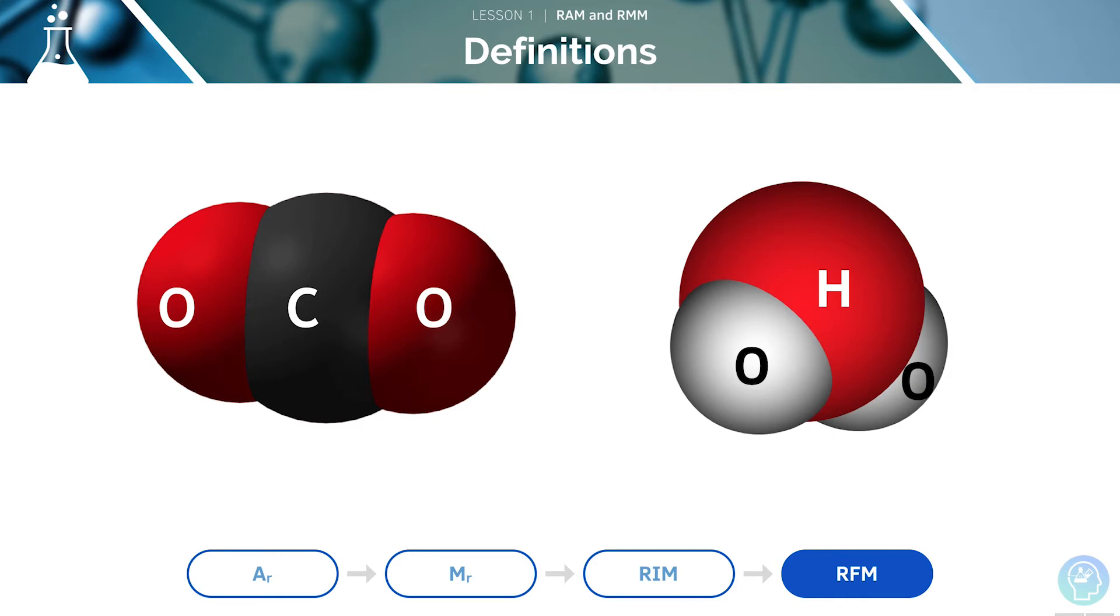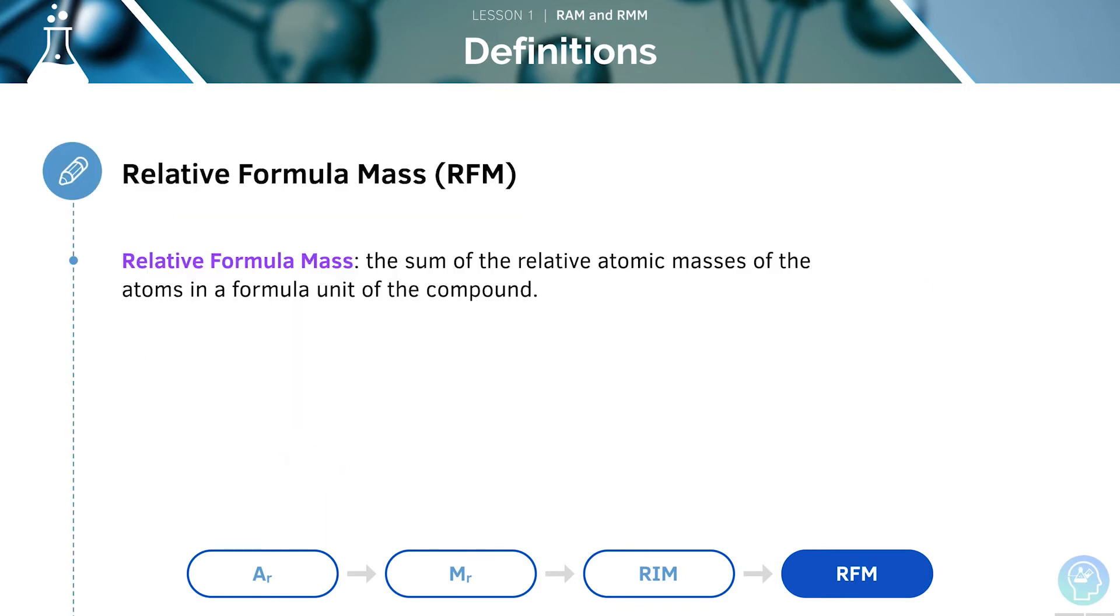We'll now be looking at relative formula mass. Here, we can see that the relative formula mass of carbon dioxide is 44, and for water, it will be 18. This is the definition of relative formula mass. It is the relative mass used for giant covalent compounds or ionic compounds. An example of a giant covalent or ionic compound is Mg(OH)2. Let's work out its relative formula mass step by step.